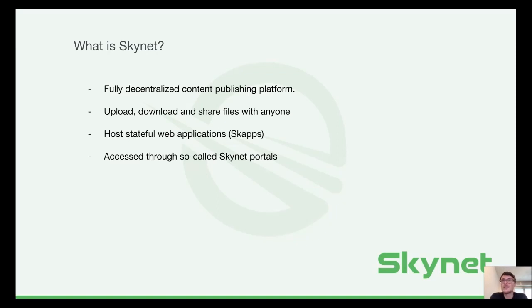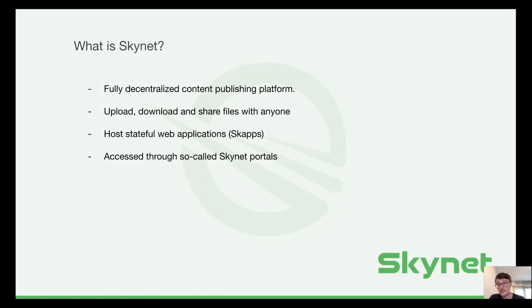Skynet is a fully decentralized content publishing platform. It can be used to upload files, download them, and share them with anybody. It can also be used to host stateful web applications, which are called Skynet Apps or SCAPs. SCAPs are essentially decentralized websites on Skynet. All of that can be done by using so-called Skynet portals.